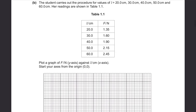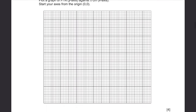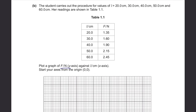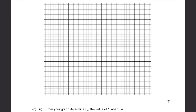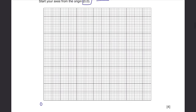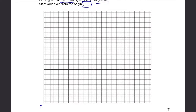Part B: the student carries out the procedure for values of L equals 20cm, 30cm, 40cm, 50cm, and 60cm. Her readings are shown in table 1.1. Plot a graph of force against length, starting your axes from the origin (0, 0). They've already told you which variable is on each axis, so start from 0 for both axes and don't change this.